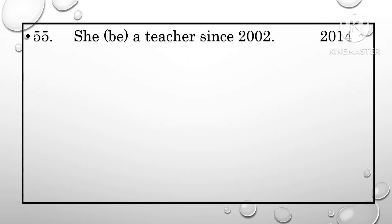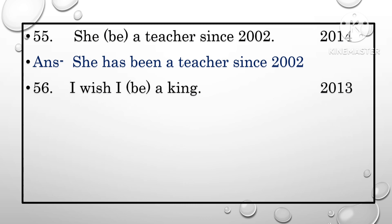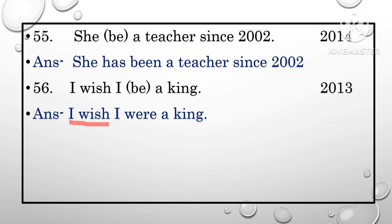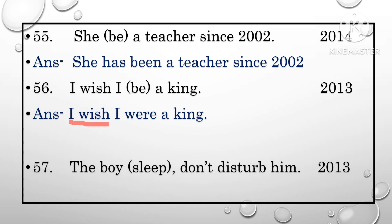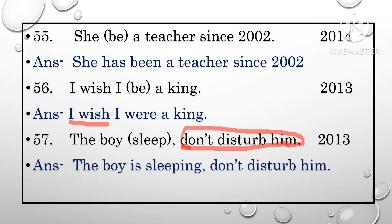'She has been a teacher since 2002.' Next: 'I wish I be a king' — answer: 'I wish I were a king.' Finally: 'The boy sleep. Don't disturb him.' Answer: 'The boy is sleeping. Don't disturb him.' — present continuous tense.